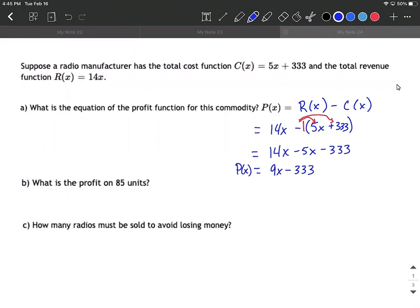Alright, we can use that to determine what the profit's going to be on selling 85 units. 85 is the number of units, that's a value for x. So it's 9 times 85 minus 333. Just substituting that 85 in for x, and that's 432.